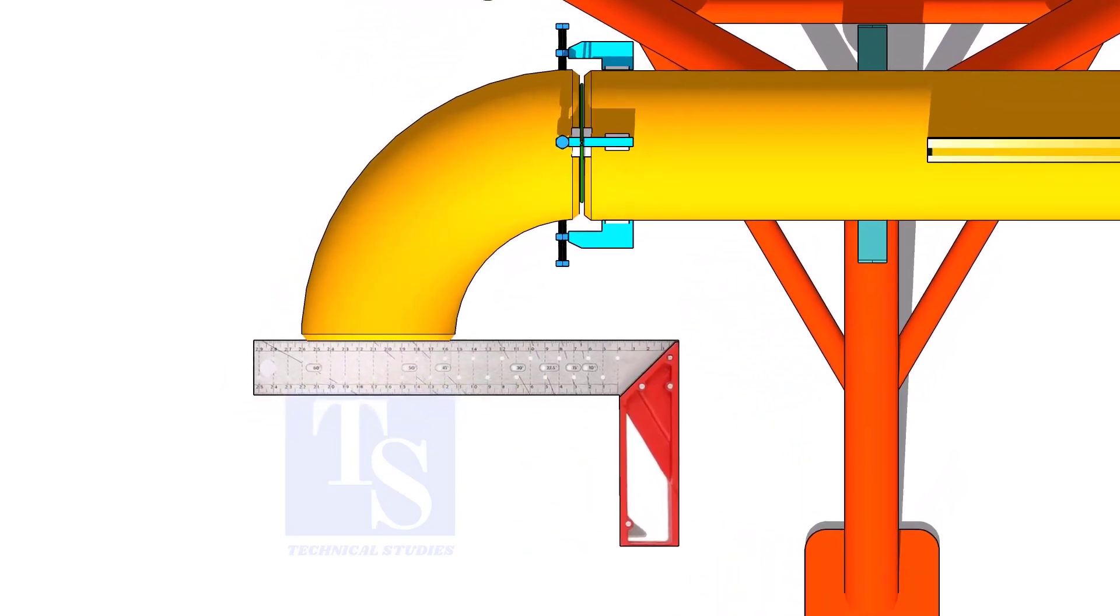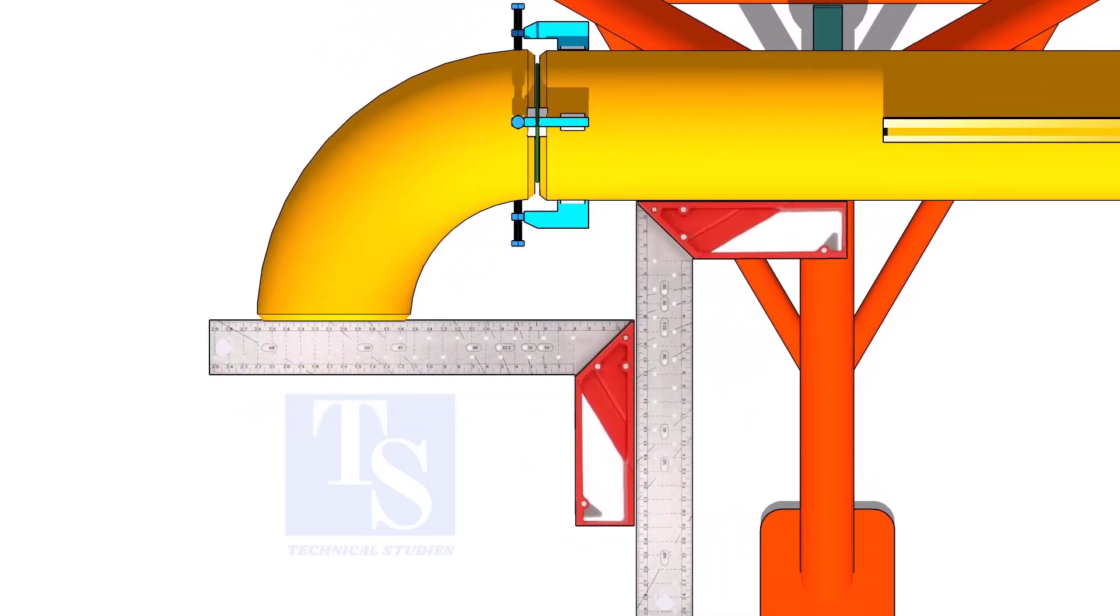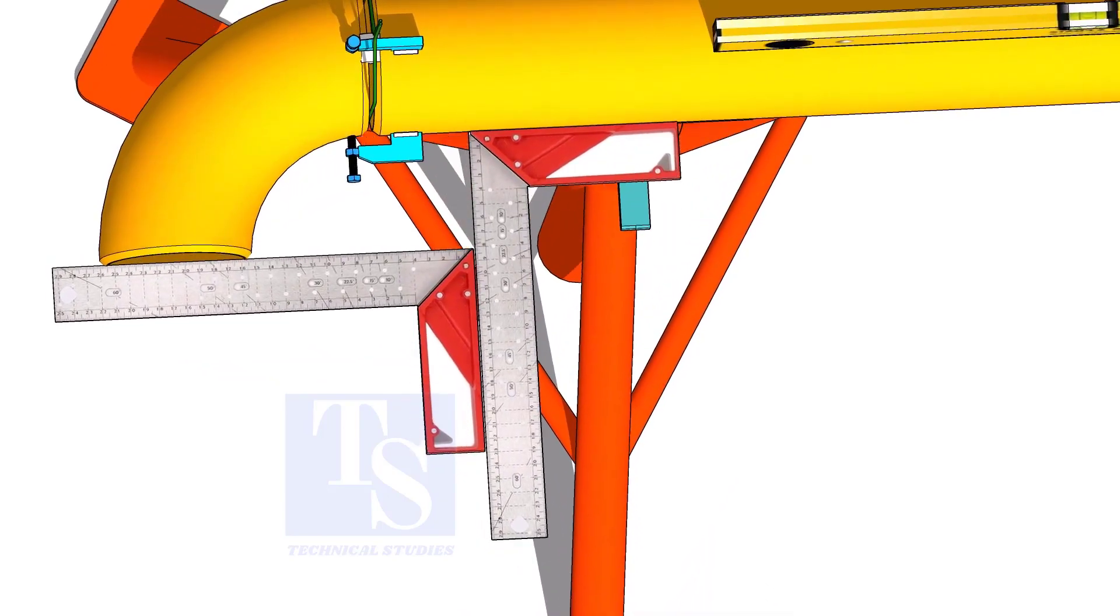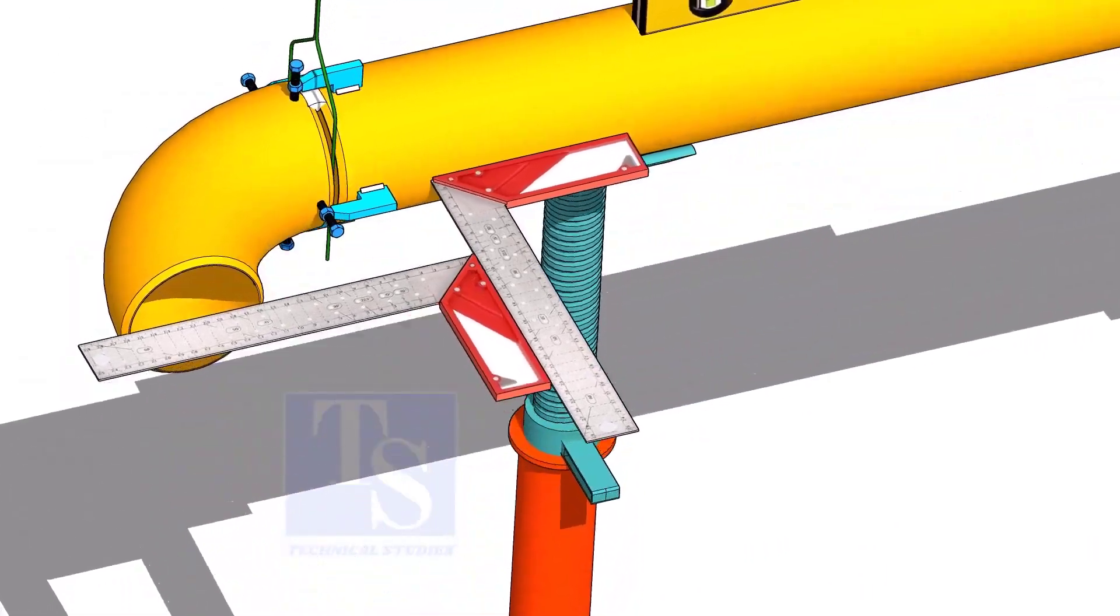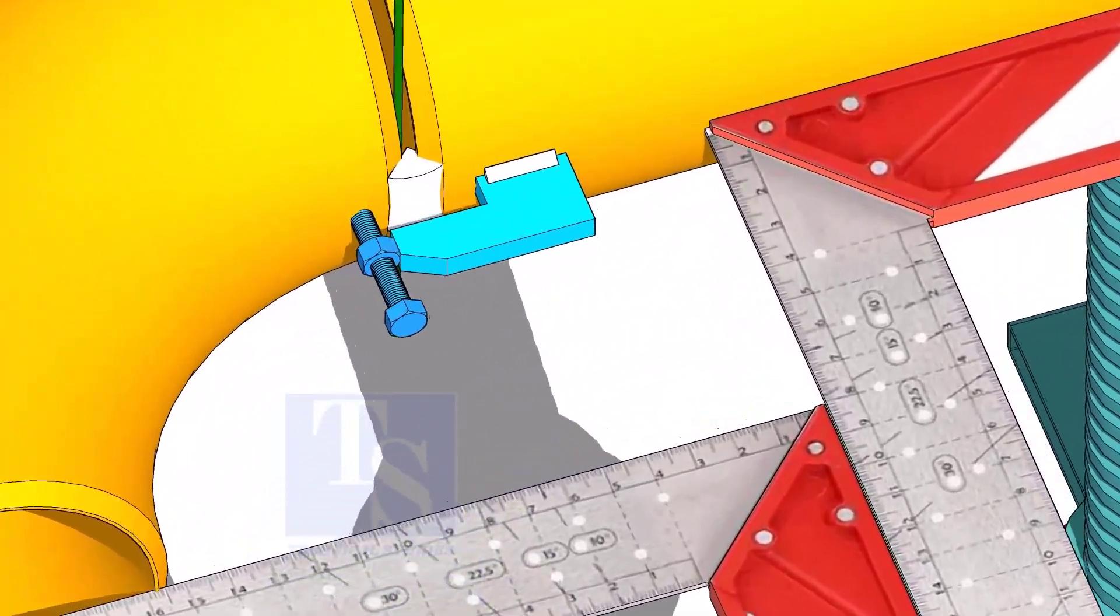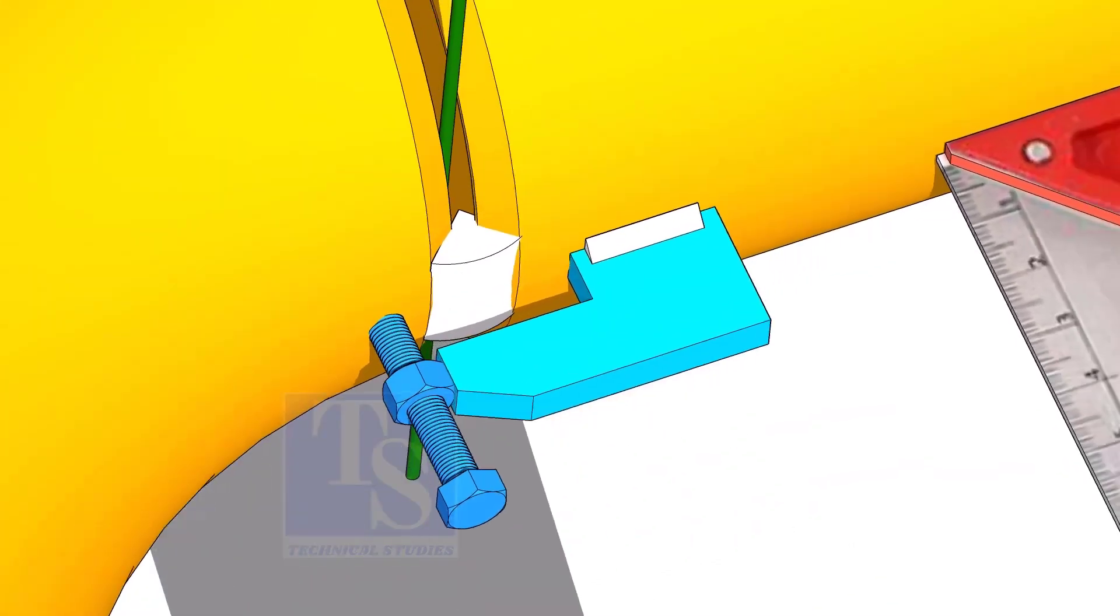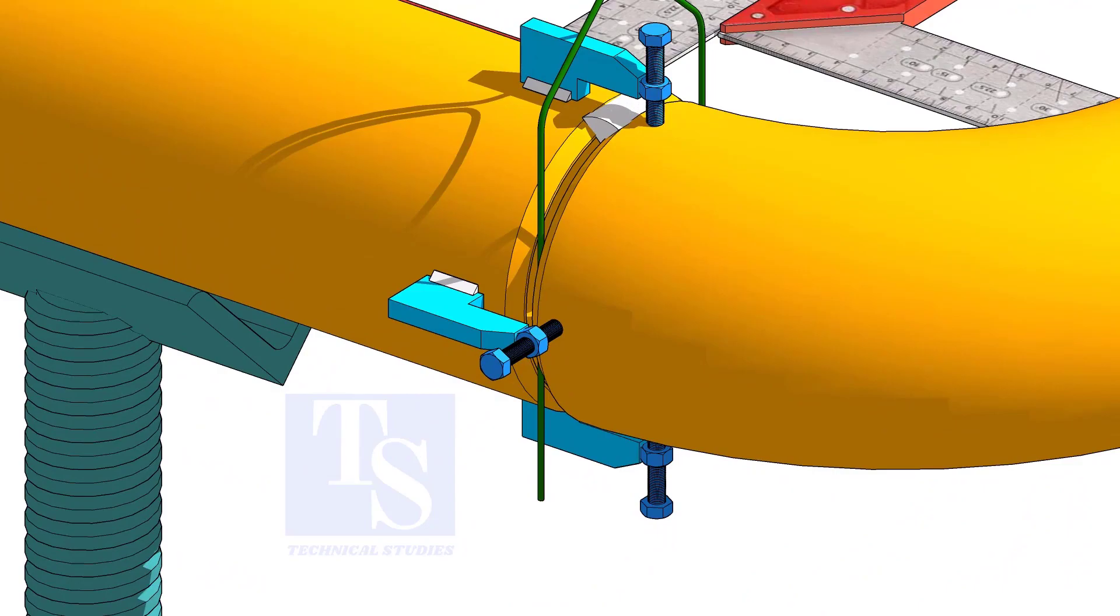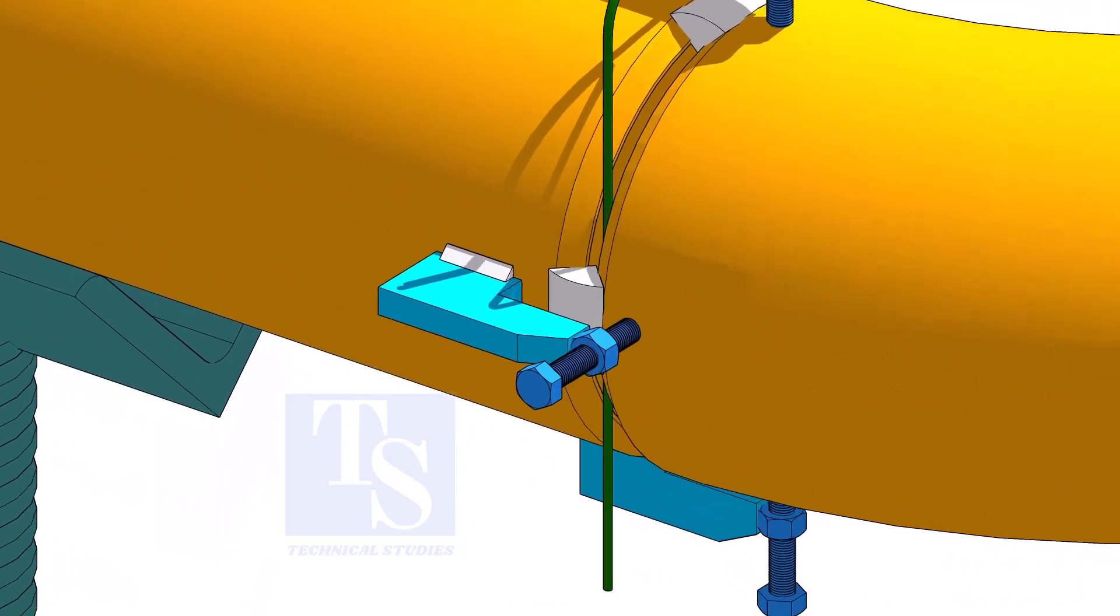Correct the squareness of the elbow using right angles, as shown. Tack weld at both sides of the joints, at the front of the elbow and the back end of the joint.